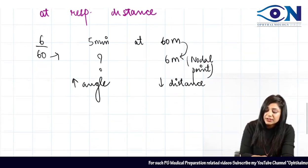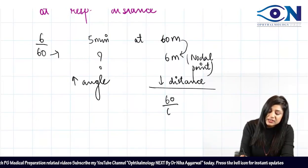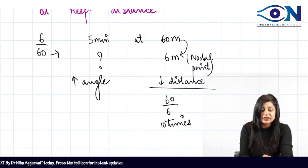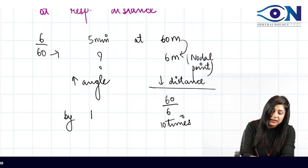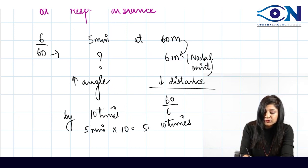Because the distance is decreasing 10 times, the angle is also increasing by 10 times. So what will be the angle? Therefore, 5 minutes into 10, that equals 50 minutes. The clear-cut answer will be 50 minutes.